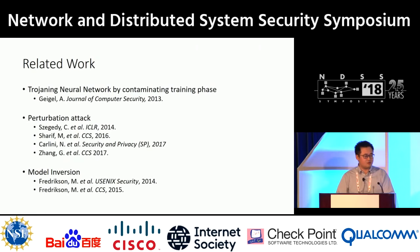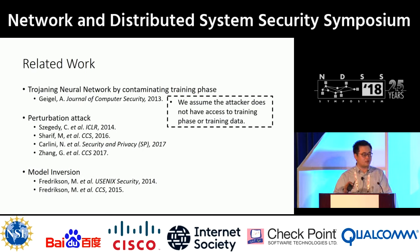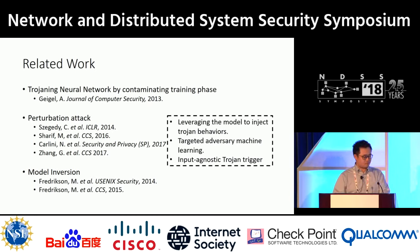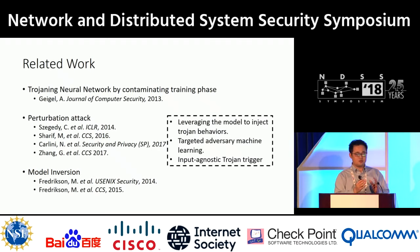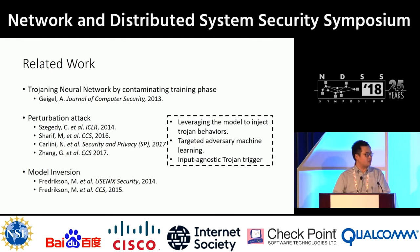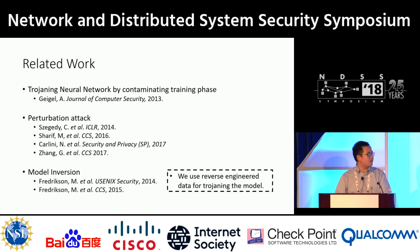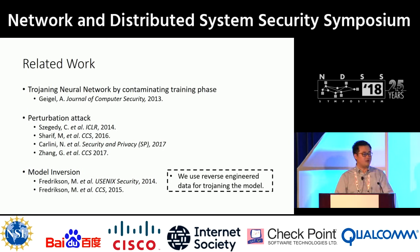These are the closely related works. The first line of work is backdooring neural networks by contaminating the training phase — but we assume the attacker does not have access to the training phase or training data, which is our key difference. The second line is perturbation attacks. Our difference is that we leverage the model to inject backdoor behaviors and perform targeted adversarial machine learning — we want the backdoor input classified as a specific identity, not just misclassified. Our trigger is also input-agnostic, unlike prior work that crafts a trigger per input. The last line is model inversion, which tries to leak training information — whereas we use reverse-engineered data solely for backdooring the model.